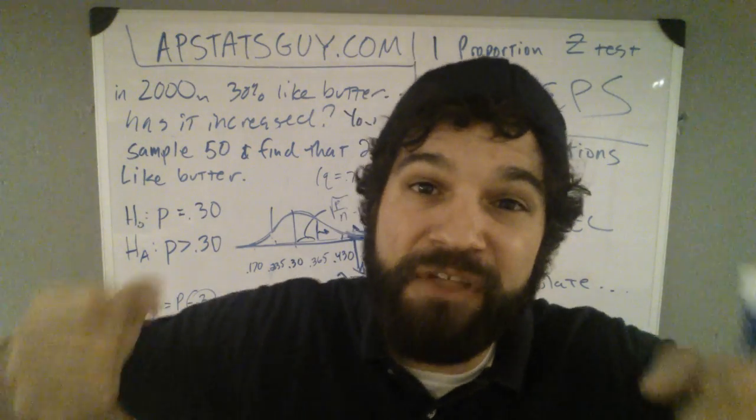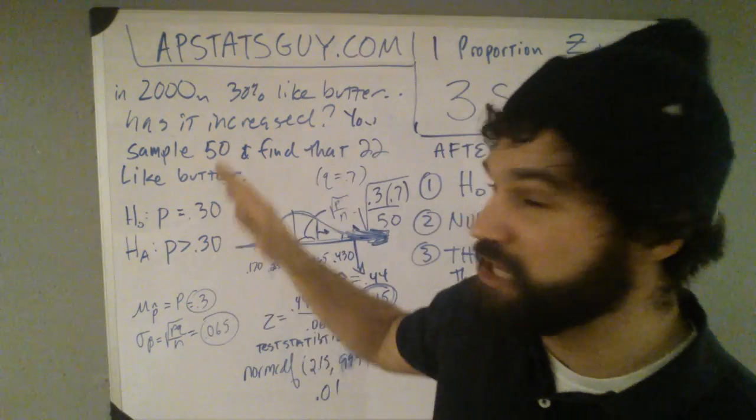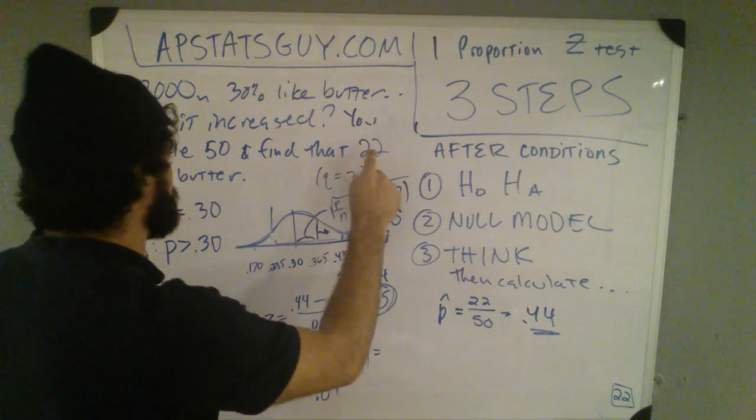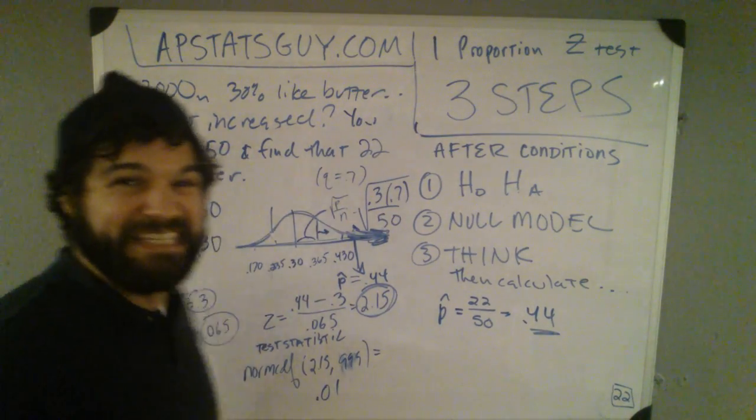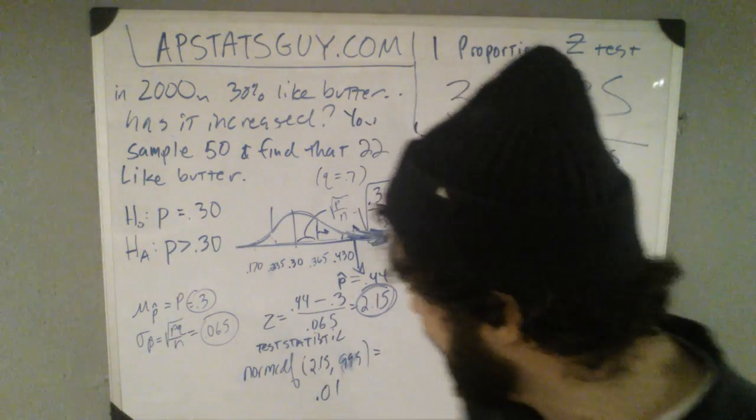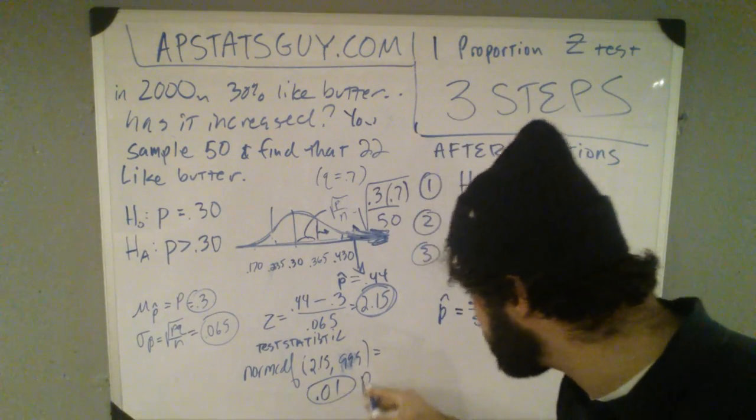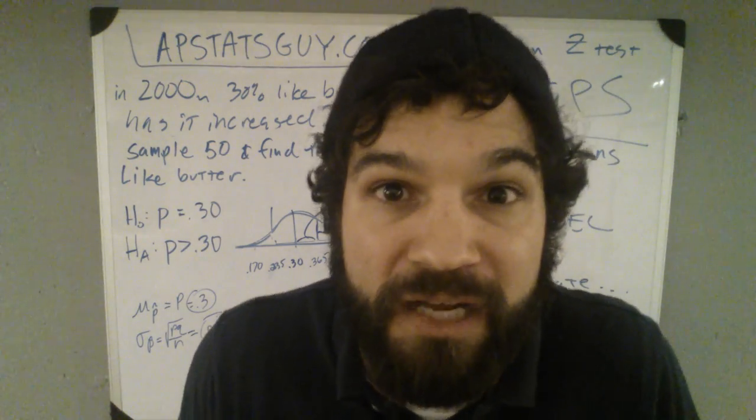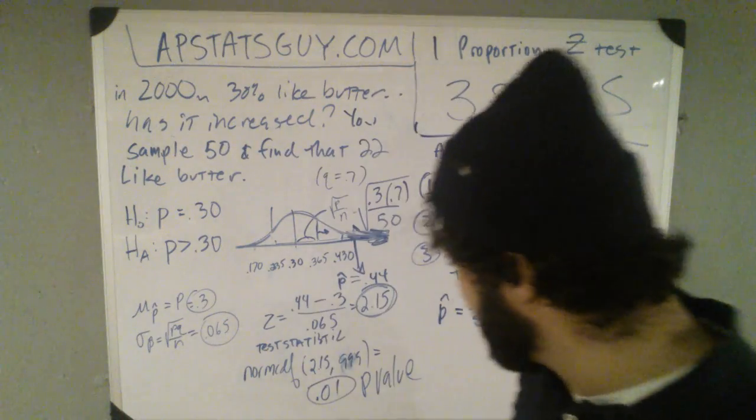So, this is what it's saying. If the null were true, if 30% of people did like butter, getting this random sample, 22 out of 50, getting that randomly, if the null were true, would only happen 0.01. That's my p-value. It would only happen randomly about 1% of the time. I'll say that's pretty low.